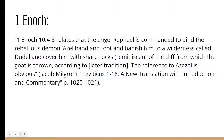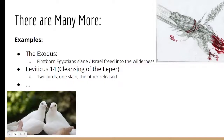From 1 Enoch 10:4–5, the angel Raphael is commanded to bind the rebellious demon Azel hand and foot and banish him to the wilderness called Dudel, covering him with sharp rocks — reminiscent of the cliff from which the goat was thrown according to later tradition. The reference to Azel is an obvious parallel to Azazel, as noted by commentator Joseph Milgrom. This is a relatively late Jewish text that didn't make it into the Bible, but it shows this theme appearing in Israelite story after story: two figures, one sacrificed, one released or expelled.